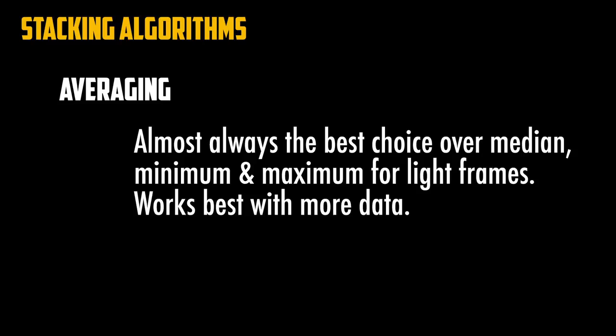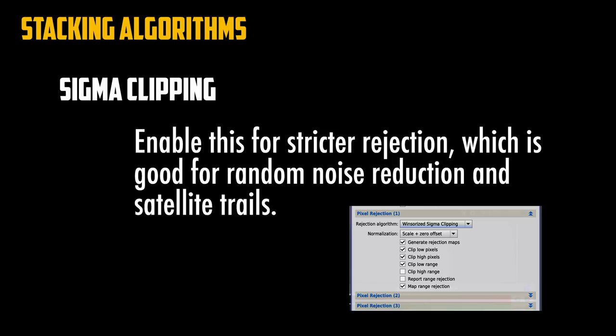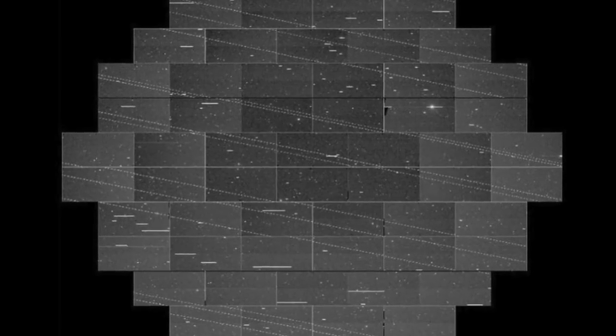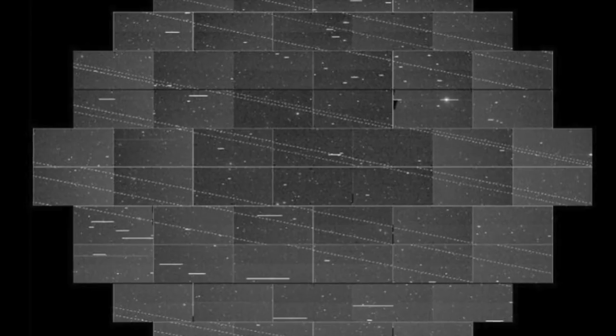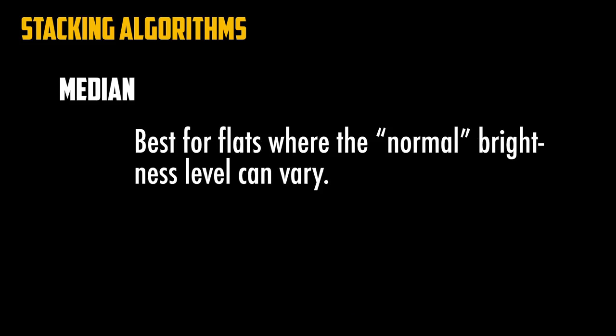When talking about the different stacking algorithms, averaging is the default for all of these programs for good reason — it is the best method for stacking light frames, and it works best with more data. To make those algorithms even better there's usually an option for something called sigma clipping or some kind of rejection method. To enable stricter rejection you want to use sigma clipping or Winsorized sigma clipping in PixInsight, which is good for getting rid of outliers — say you've got Starlink satellites running through your images. Other algorithms like median, minimum, or maximum are more specialised and are usually for flats and other calibration frames. Most of the time you're going to want to use average — it's the default for good reason.